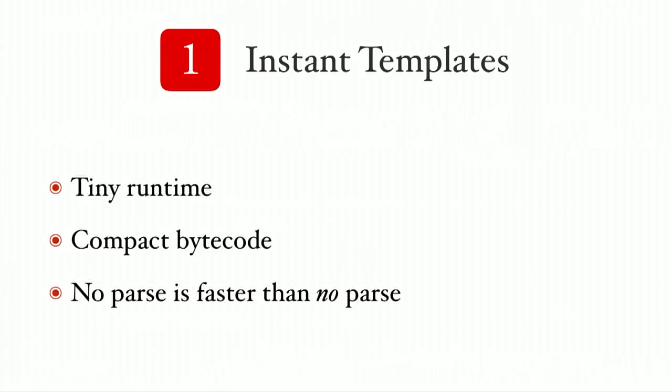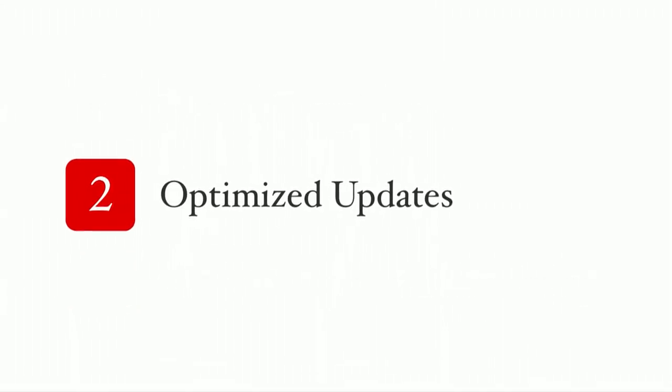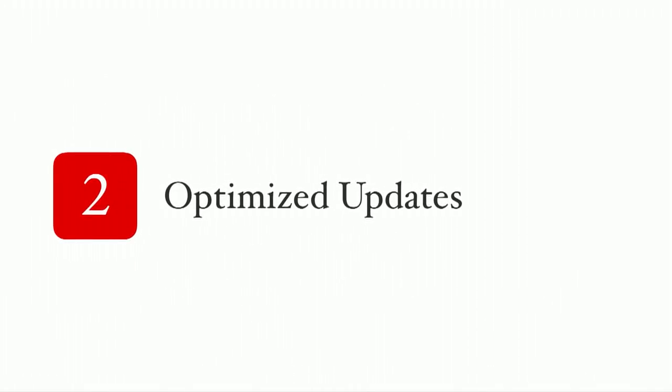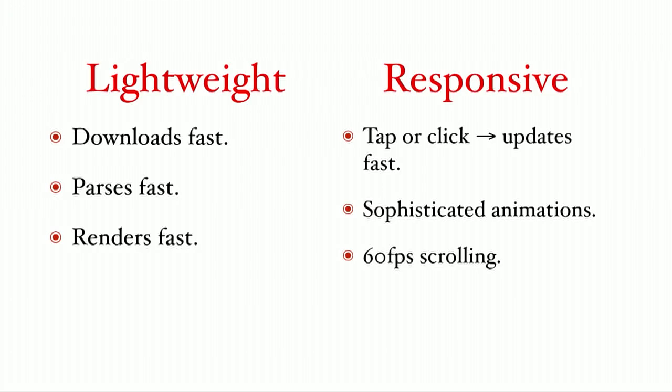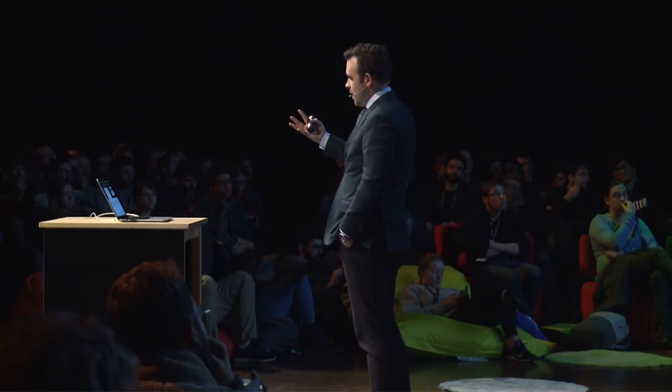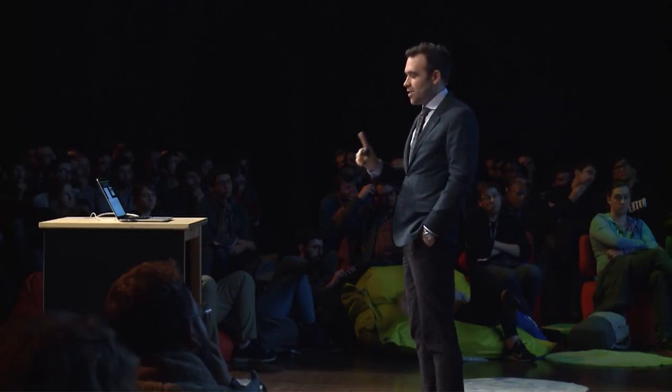So that's the idea behind instant templates. By moving complexity into the compiler, we can shrink the size of the runtime. Compiled bytecode is smaller than the equivalent JavaScript to download, and no parse step is faster than any parse step. Let's talk about number two: optimized updates. These are cases where we can start to not just match virtual DOM in performance, but actually beat it by default. Loading quickly means being lightweight, and being lightweight usually means making very hard trade-offs. One of the trade-offs of virtual DOM-based libraries, including React, is that fast initial render is prioritized over fast updating renders.